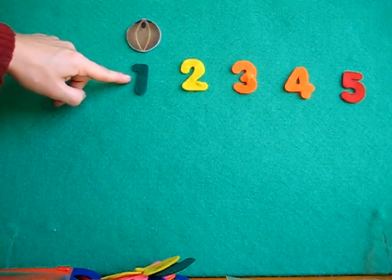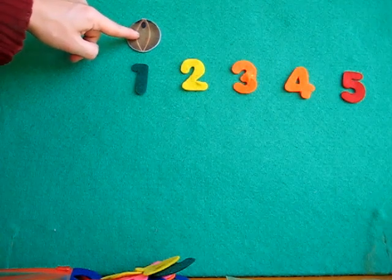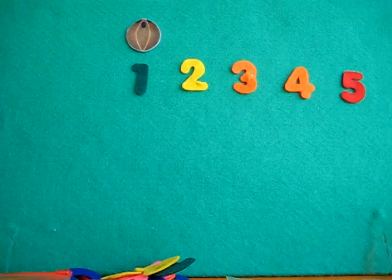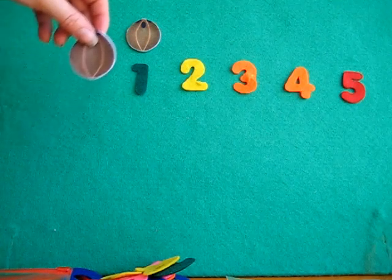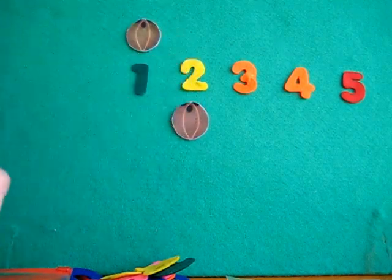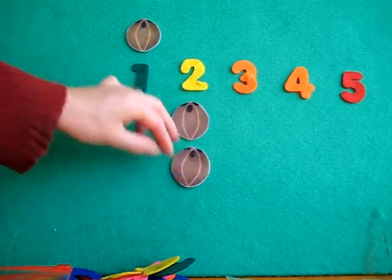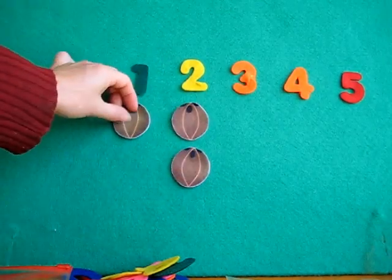We look at number one, say one. Let's put one coconut on our board. Next comes two. How many coconuts do we need? Two. One, two. Let's put them down here so you can see them a little better.